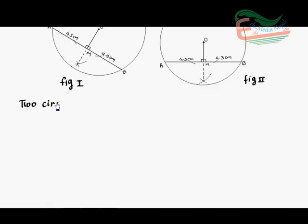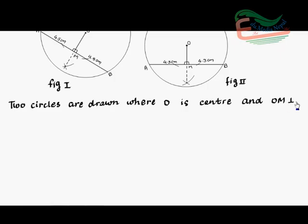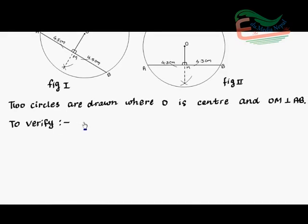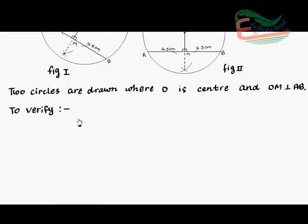Two circles are drawn where O is center and OM perpendicular to AB. Then, next we write to verify. According to our figure, we have to verify AM equals to MB. So we write the same thing. In to verify, we write AM equals to MB.